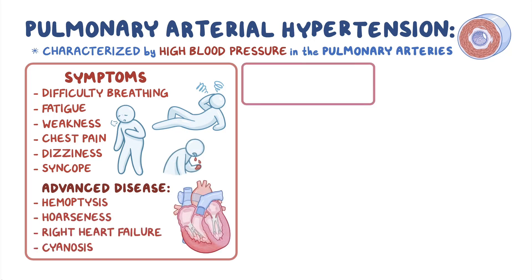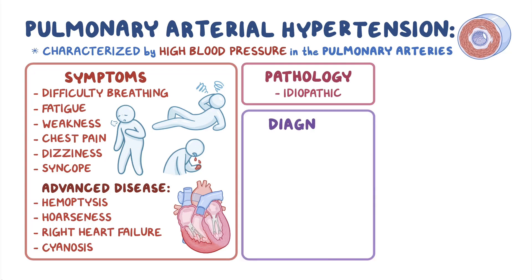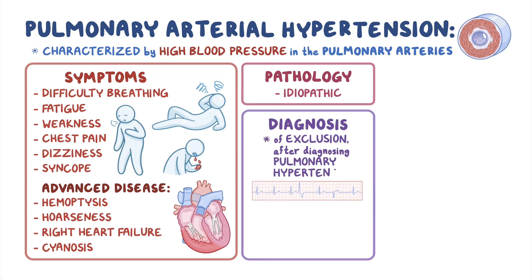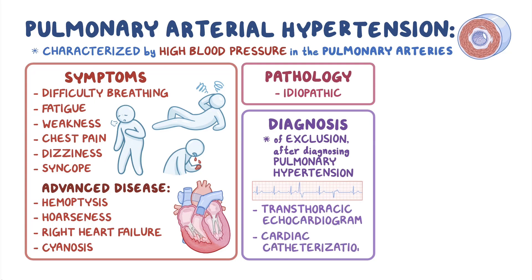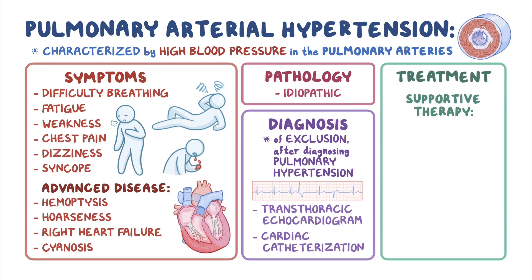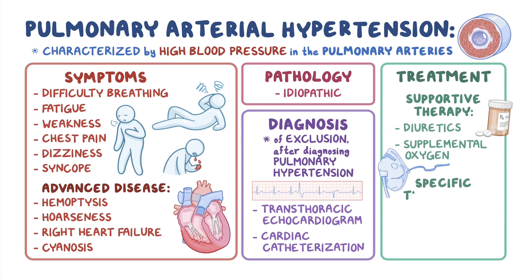PAH is most often idiopathic and is a diagnosis of exclusion made after diagnosing pulmonary hypertension through transthoracic echocardiogram or cardiac catheterization. Treatment involves supportive therapy as needed, like diuretics and supplemental oxygen, and specific treatment with medications that dilate blood vessels.